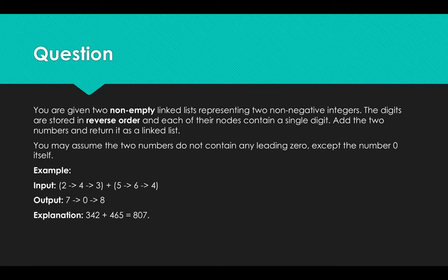Let's see the problem first. You are given two non-empty linked lists representing two non-negative integers. The digits are stored in reverse order and each of their nodes contain a single digit. Add the two numbers and return it as a linked list. You may assume the two numbers do not contain any leading zero except the number zero itself.